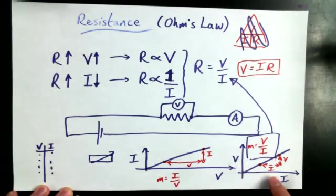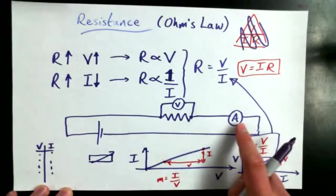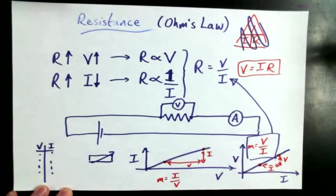So V is on the vertical axis, current is on the horizontal axis. And if I find the slope for that circuit, as I increase the voltage, I will measure increasing currents. What will I be able to tell?